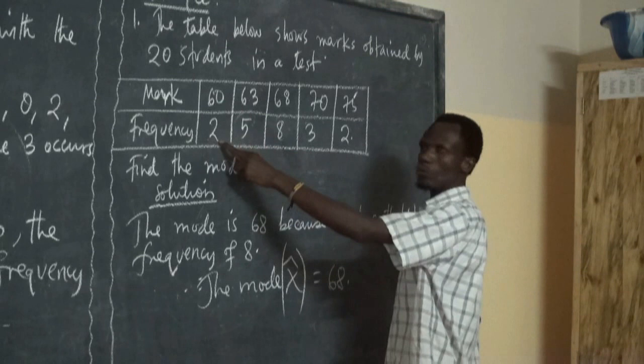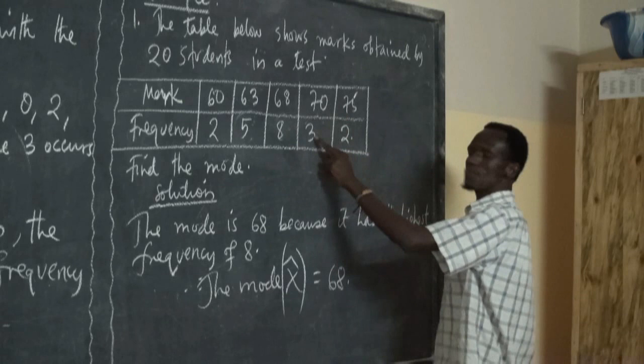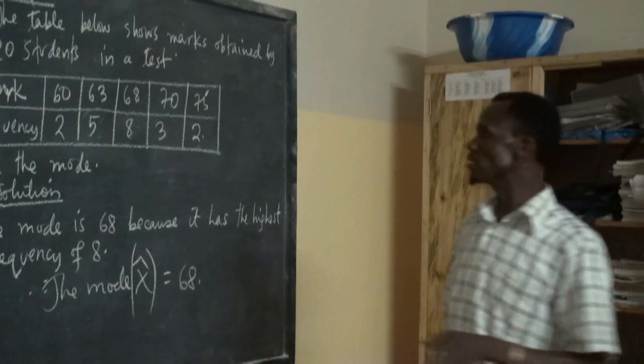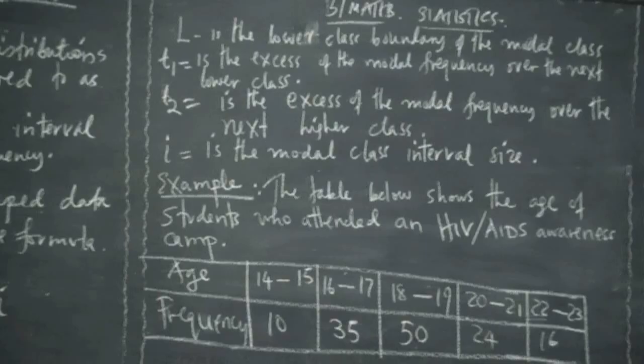To verify: 60 is by 2, 63 is by 5, 68 is by 8, 70 is by 3, and 75 is by 2. The mode has the highest frequency, and that is called the mode. This is how we can determine the mode from a frequency distribution table.